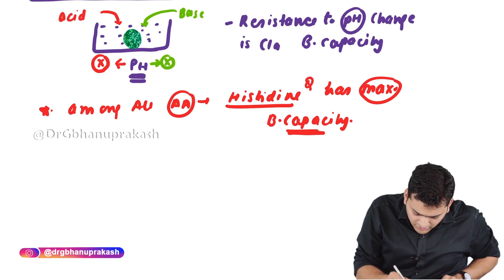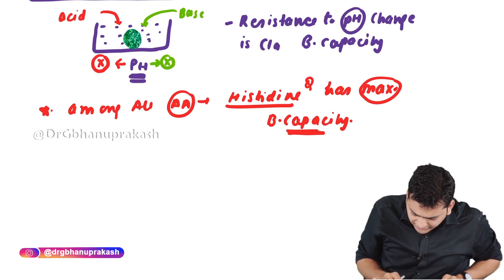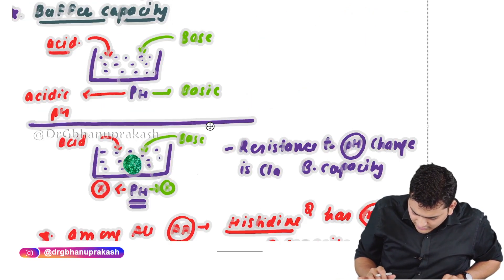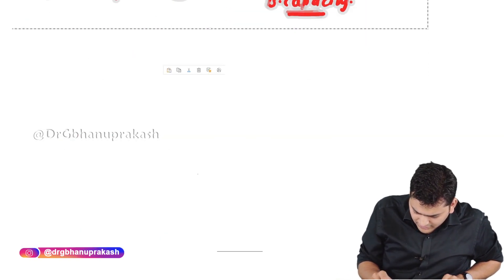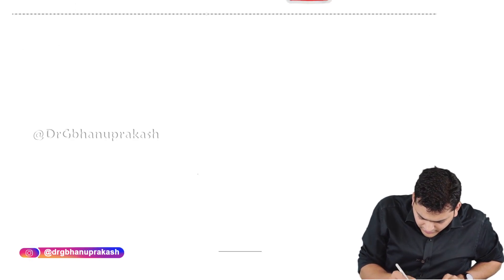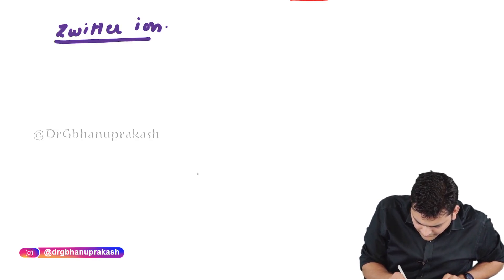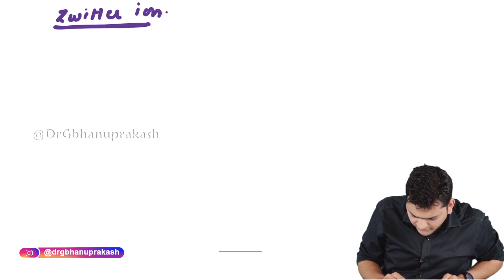The next concept is somewhat related to pH, and that is called as zwitter ion. Let's understand what the meaning of zwitter ion is.